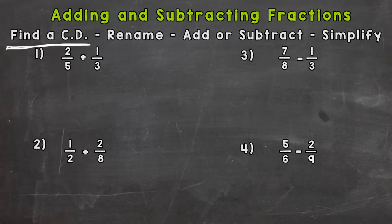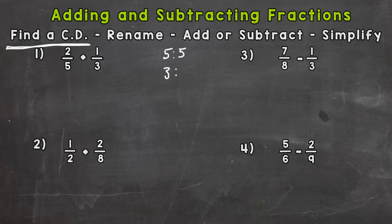To find the common denominator we need to find the least common multiple between five and three. I'm going to come over to the side, list my multiples for five and three, and see when they first meet. When you get good at these problems and have more experience you'll be able to figure out the least common multiple in your head, but for more complicated problems you might need to write out the multiples list.